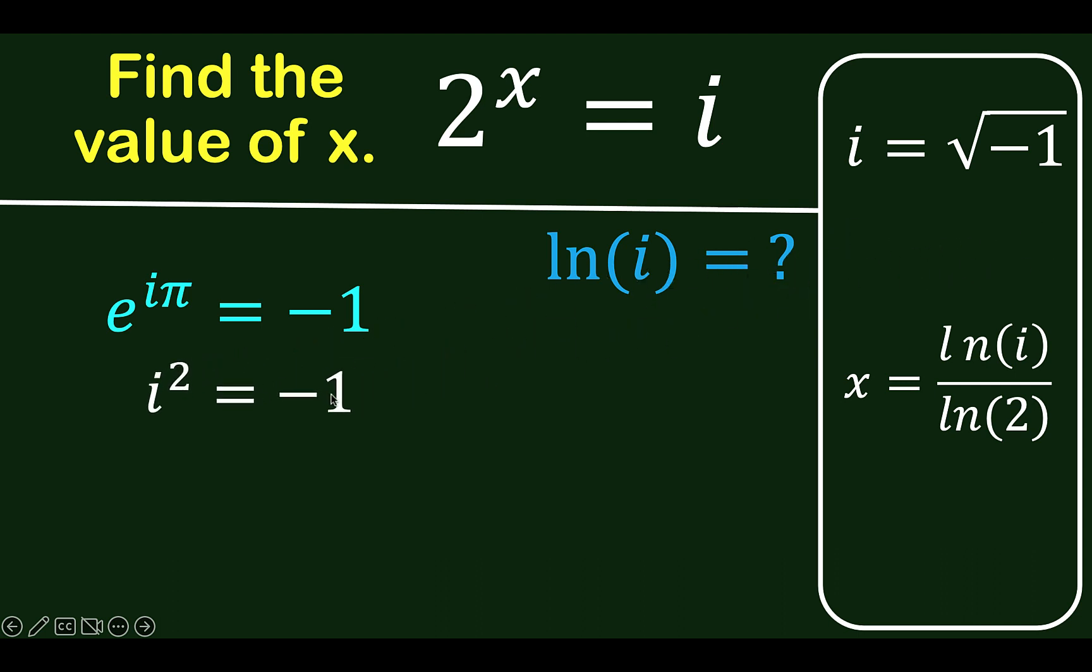This means we can now replace this negative 1 by i squared to have this result. Let's put this back here. So again, let's take the logarithms of both sides to arrive at ln of e^(iπ) equals ln of i squared.